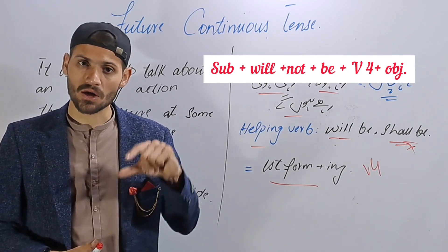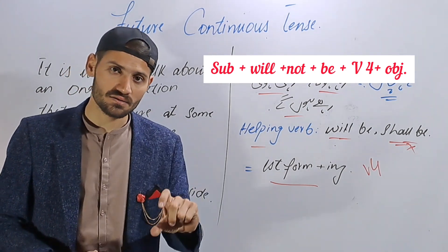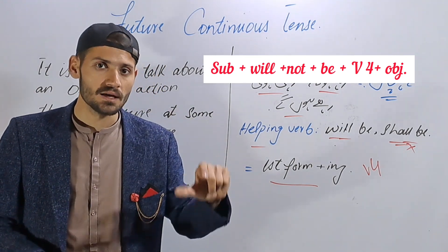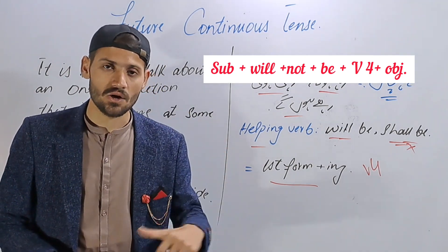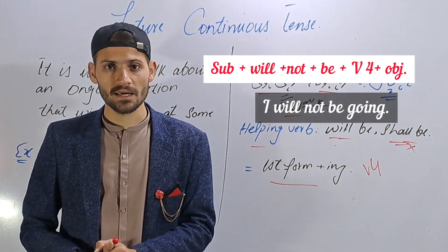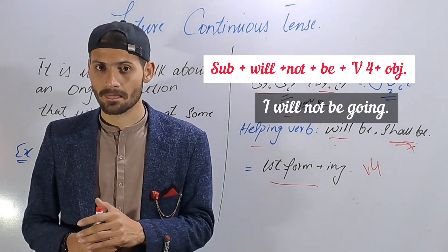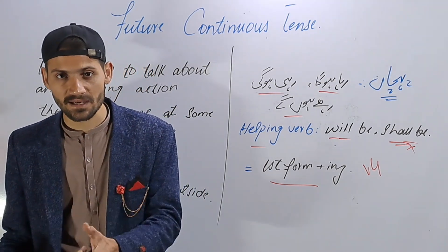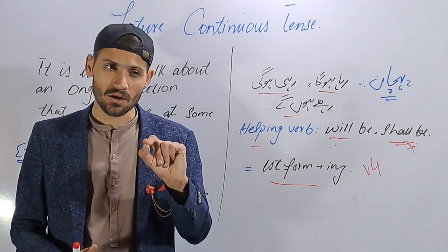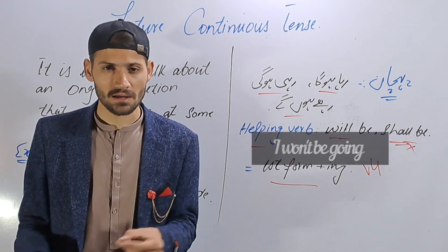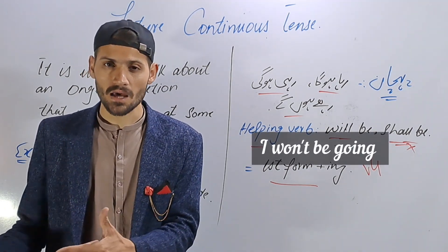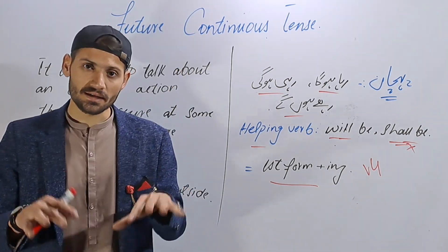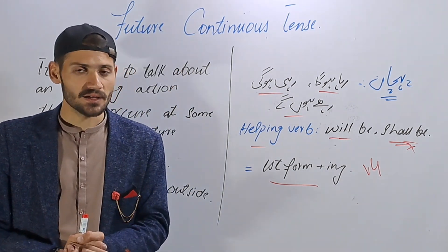For the negative structure: Subject + will not be + V+ing + object. For example: 'I will not be going,' 'It will not be raining outside.' In simple spoken form: 'I won't be going,' 'It won't be raining.'